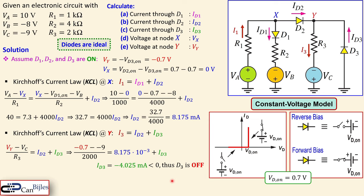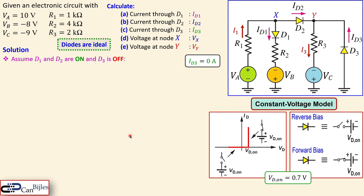Since ID3 is negative, we set ID3 equal to zero and move on with a new assumption. The new assumption is: D1 and D2 are ON, but D3 is OFF. So we already have one of the unknowns — ID3 equals 0 amps.